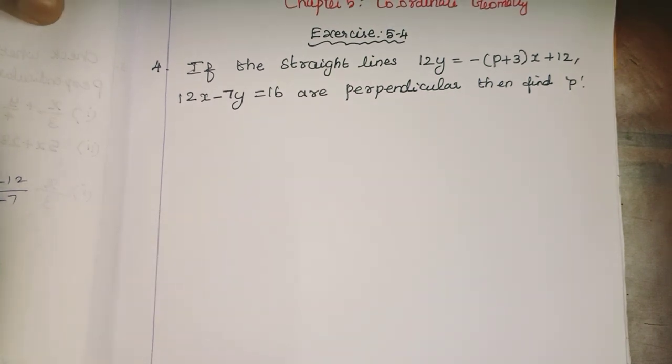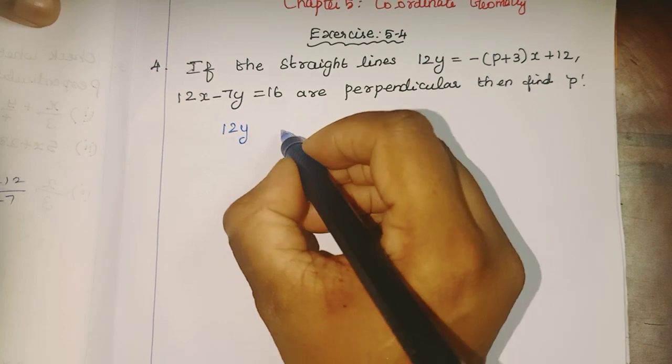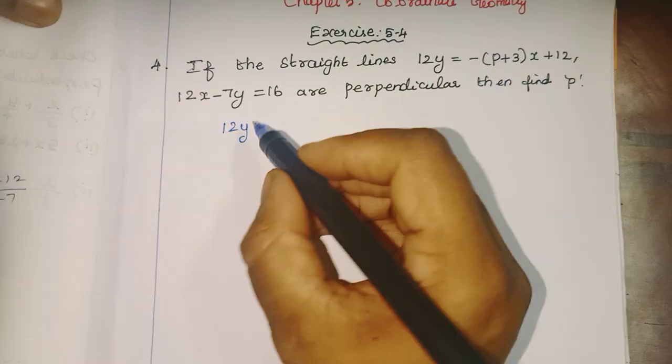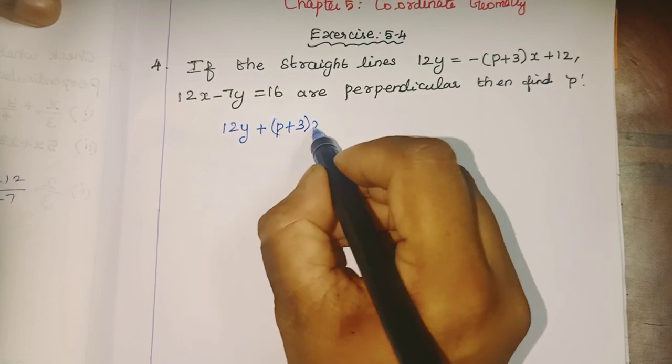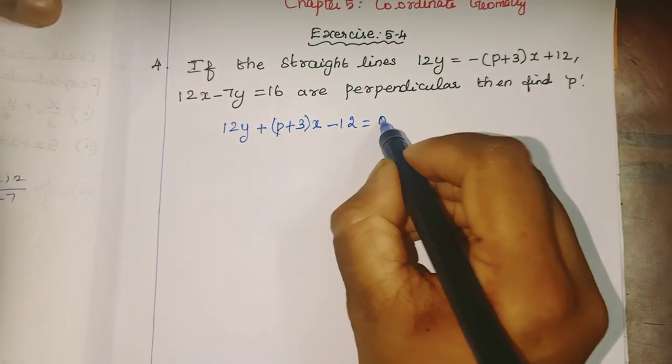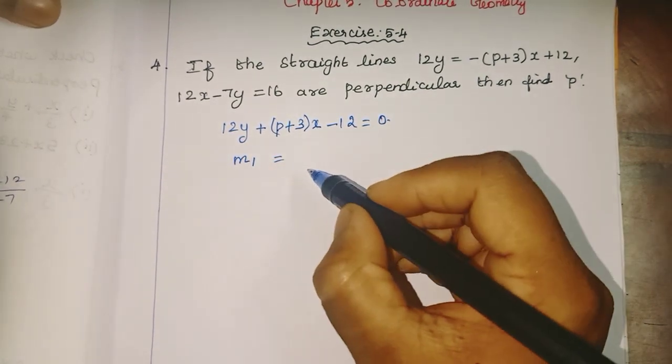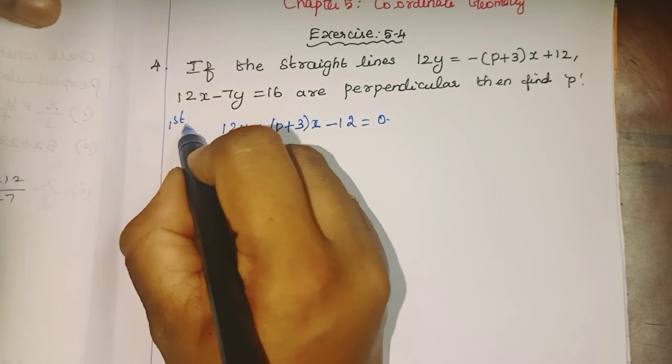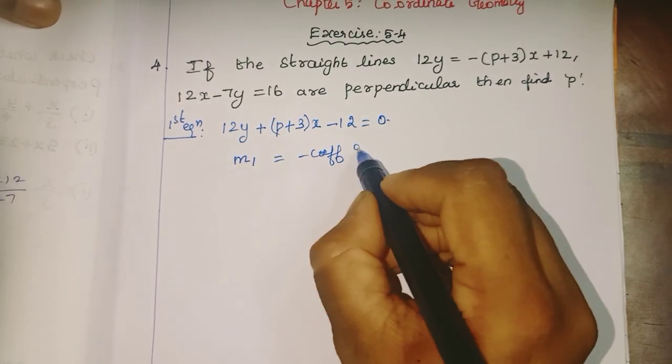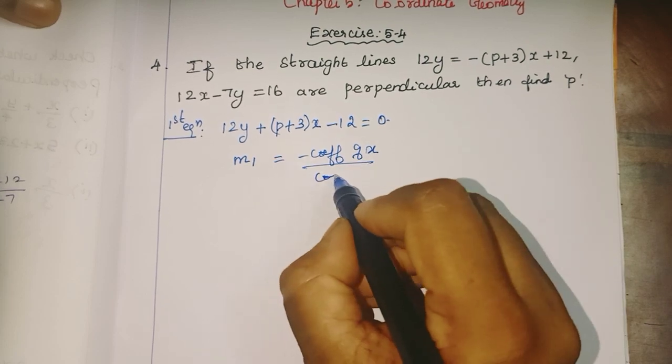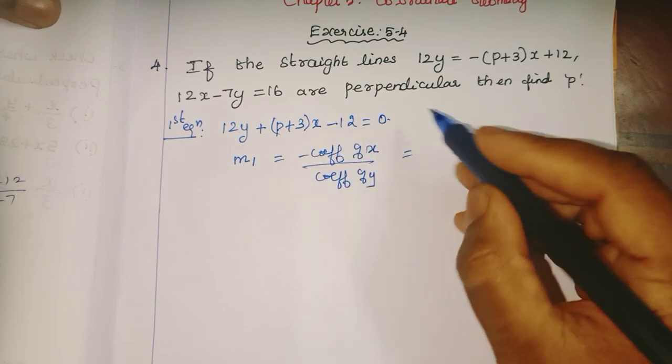First equation: 12y + (p+3)x - 12 = 0. Using the slope formula, m1 = -coefficient of x / coefficient of y = -(p+3)/12.